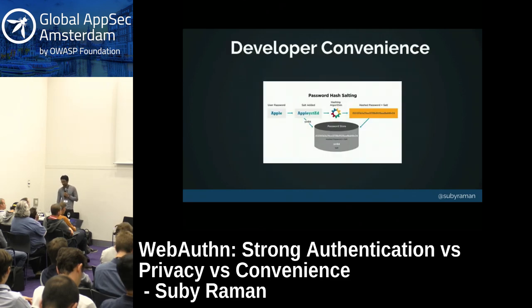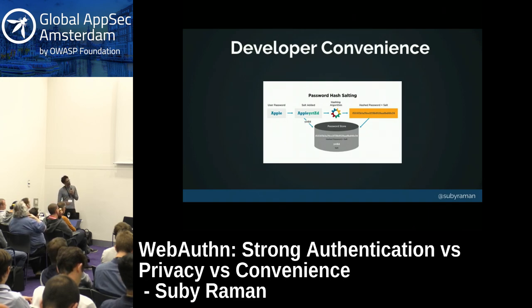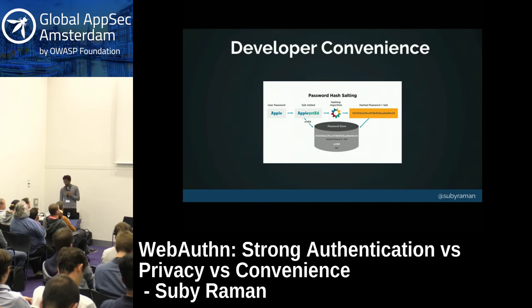Developer convenience is another huge part of this conversation. On the OWASP website, there are guides detailing all the wrong things you can do with passwords. But because the public key is public and can be shared openly, a complex salting and hashing system is really not needed. This could potentially reduce the complexity and maintenance costs of authentication systems.